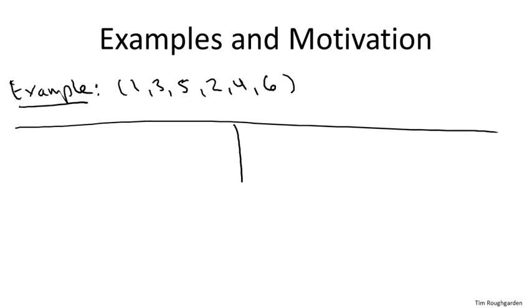Let's look at another example. So suppose we have an array of six entries, so the numbers one through six in the following order, one, three, five, followed by two, four, six. So how many inversions does this array have?